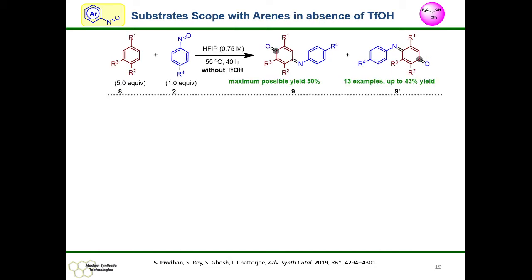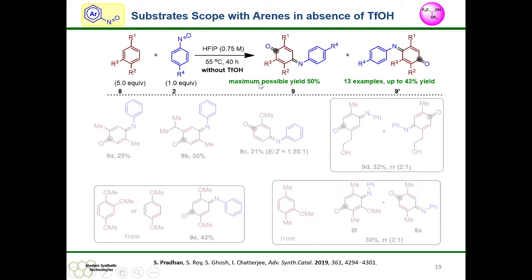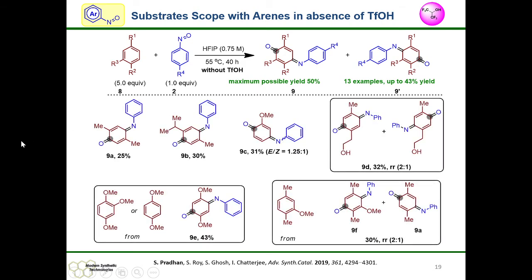Interestingly, when we replaced the electron-rich trimethoxybenzene with simple arenes, para-aminoquinone formation was the major product, and no Brønsted acid additive was needed. The Brønsted acidity of HFIP alone can trigger the formation of para-aminoquinone for simple arenes like para-xylene, para-cymene, anisole, and similar derivatives.